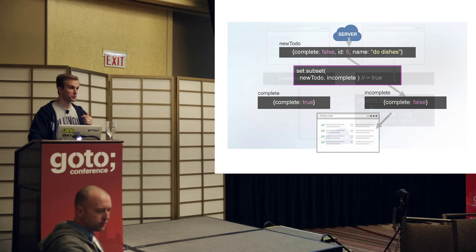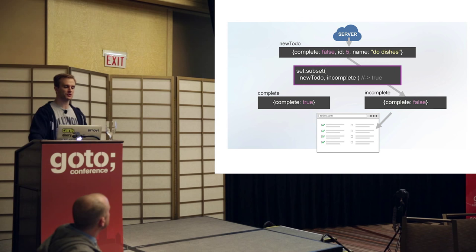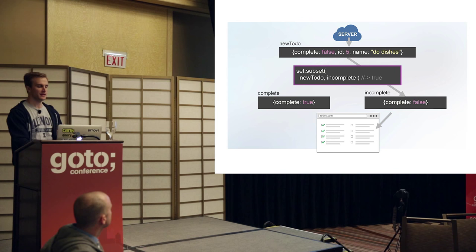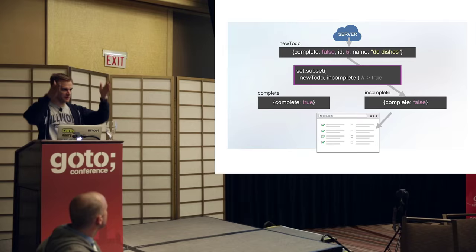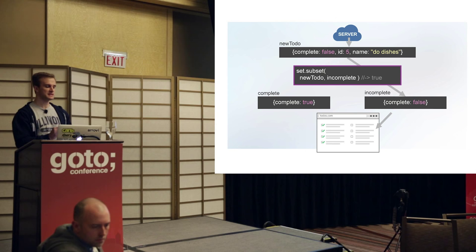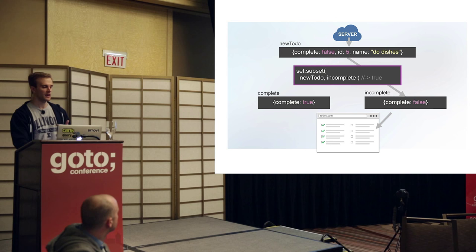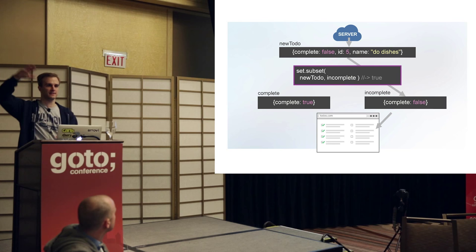Let's say the server pushed data for a new to-do — complete: false, ID: 5, name: do dishes. I've got two different sets being shown in the page: completed and incomplete. We can do the same set logic to see that the new to-do is a subset of the incomplete set and then automatically insert that new data into the list, letting live binding take care of inserting it into the DOM with no additional logic. The supermodel handles this automatically.